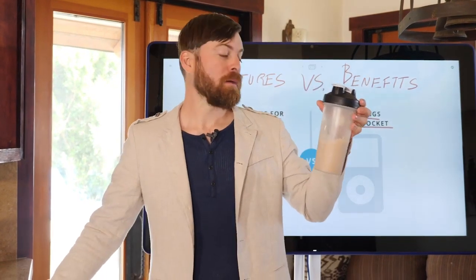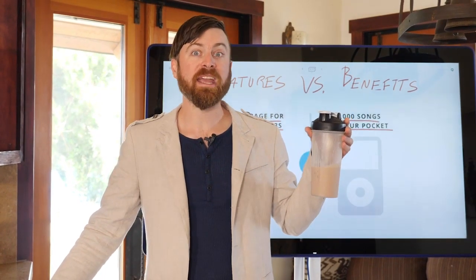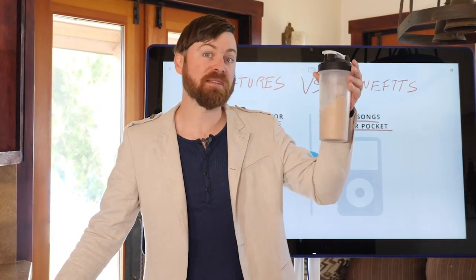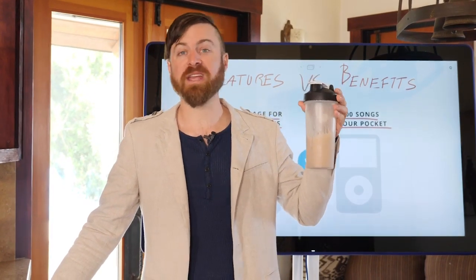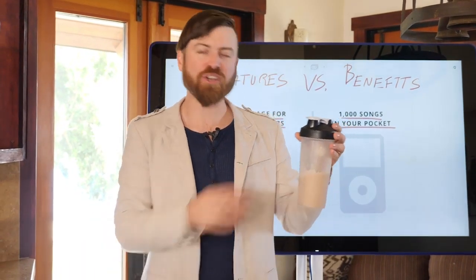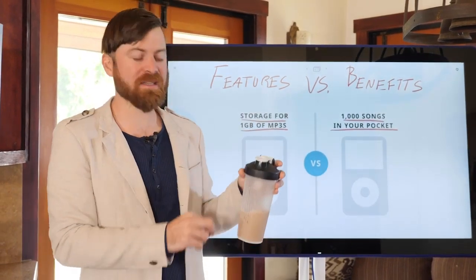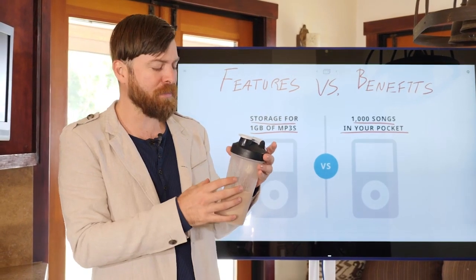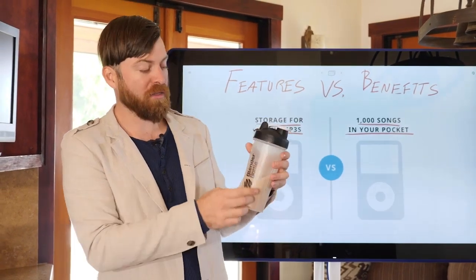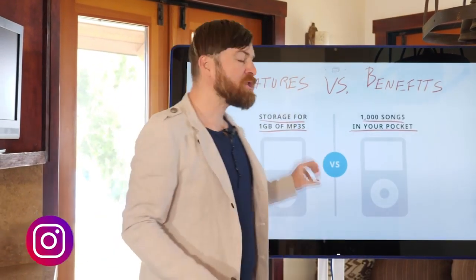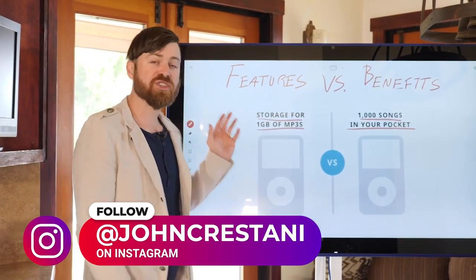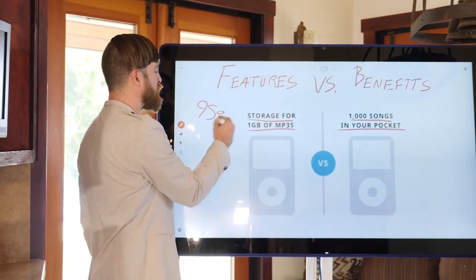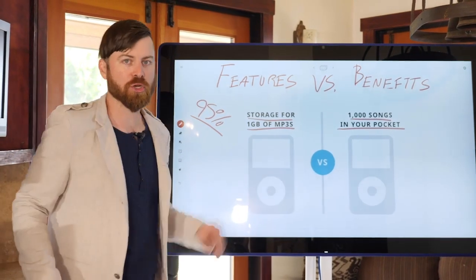A benefit for this protein shake would be something like 'easily shake and mix your protein keto shakes' or 'easily blend your shakes on the go.' It's not an actual property — the company is just going to say it's a plastic bottle with a logo. Features don't really sell; features just describe a product. The majority of people marketing — maybe 95% of companies — talk about the features.